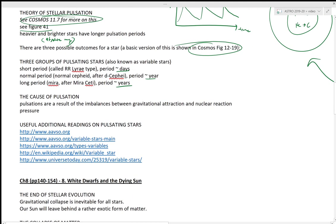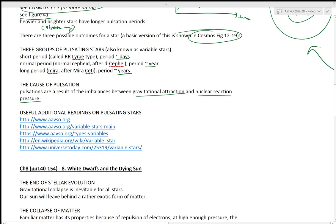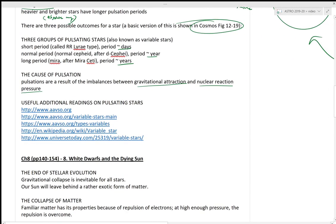The cause of pulsation, again, is a result of imbalances between gravitational attraction and the nuclear reaction pressure. So other resources for learning about pulsating stars: the AAVSO, that's the American Association of Variable Star Observers. They have wonderful pages and descriptions of what variable stars are, specifically the pulsating variables. And I encourage you to go look at those for just an additional explanation on variable stars and the pulsating variables.